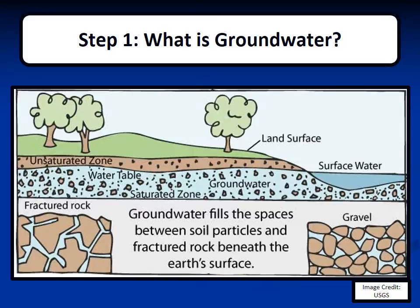Groundwater is the water found underground in the cracks and spaces in soil, sand, and rock. It is stored in and moves slowly through geologic formations of soil, sand, and rocks called aquifers. When rain falls and seeps into the soil, it first travels through an area where most pore spaces are filled with air — this is the unsaturated zone. As the water penetrates deeper, it enters an area where all pore spaces are filled with water, which is the saturated zone. The surface below which the ground is saturated is known as the water table. Water table elevation is a very important piece of information for determining groundwater flow.